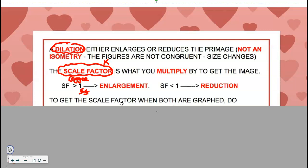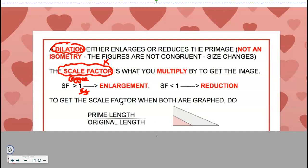But if it's already graphed and you have to figure out the scale factor, that can be tricky. You have to be careful. So it says to get the scale factor when both are graphed, you're going to have to decide did this blow up or did this shrink? So I have a generic triangle there.